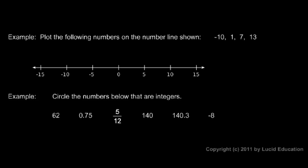Here are a couple of examples. Plot the following numbers on the number line shown: negative 10, 1, 7, 13. Now on the number line that we see here it's not marked off in units of one, so we have to imagine, here for example between 0 and 5, we have to imagine 1, 2, 3, and 4, and so on and all the other places as well.